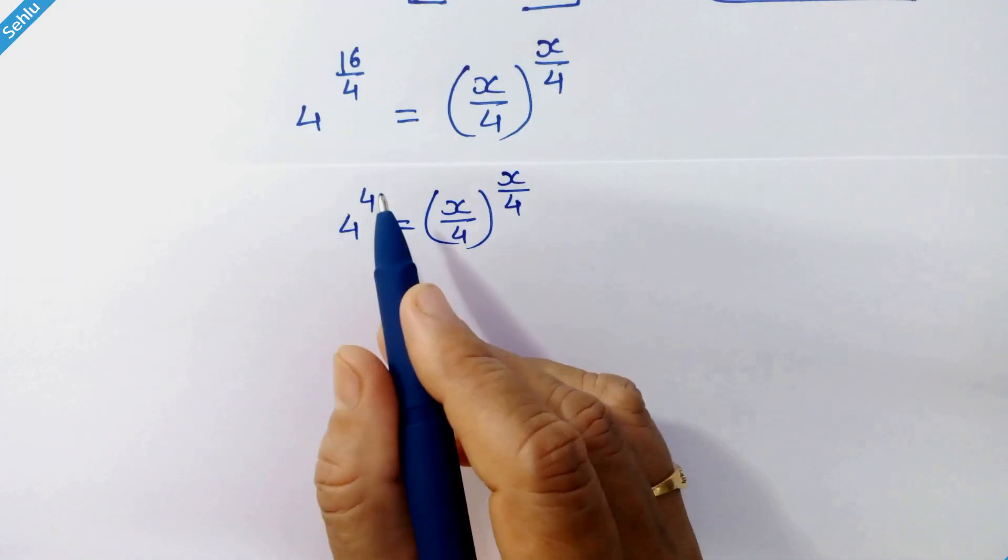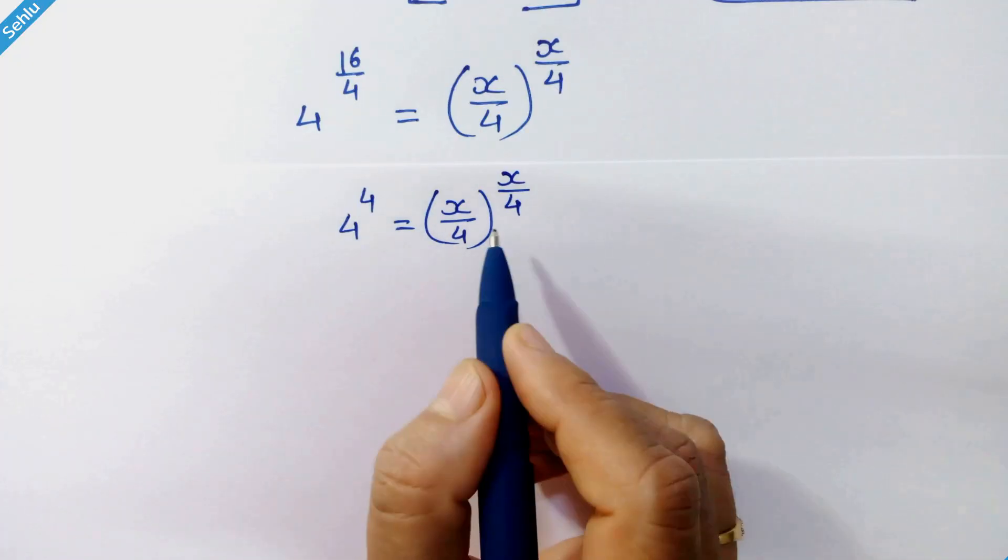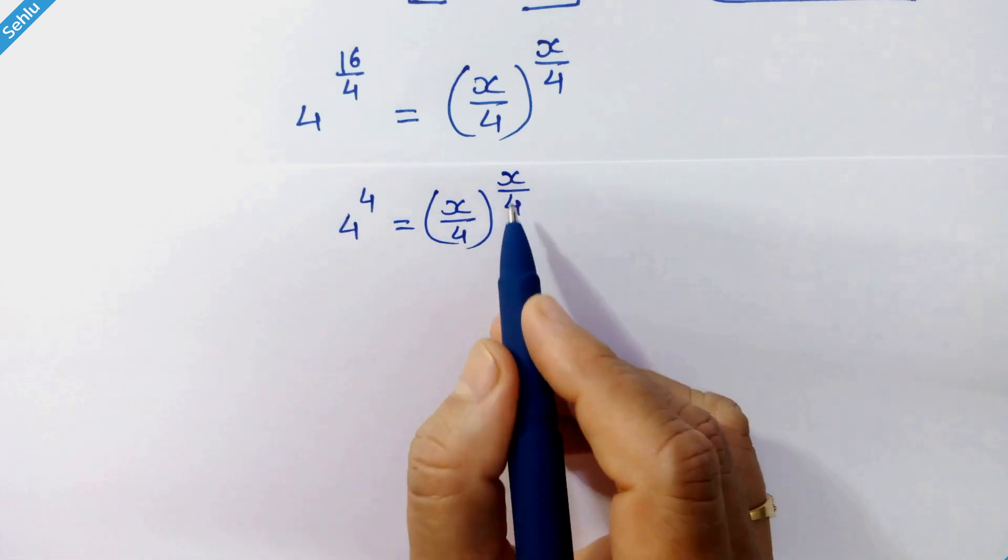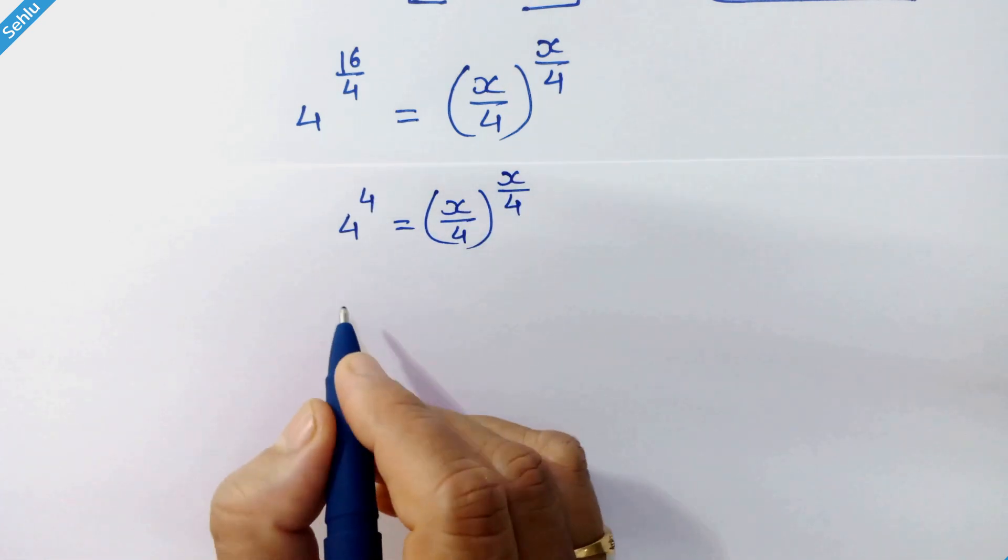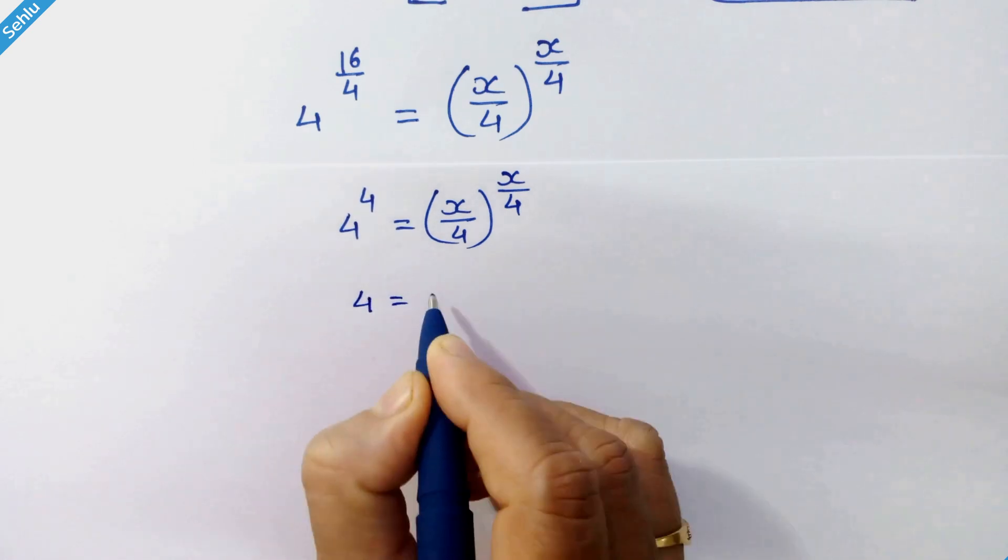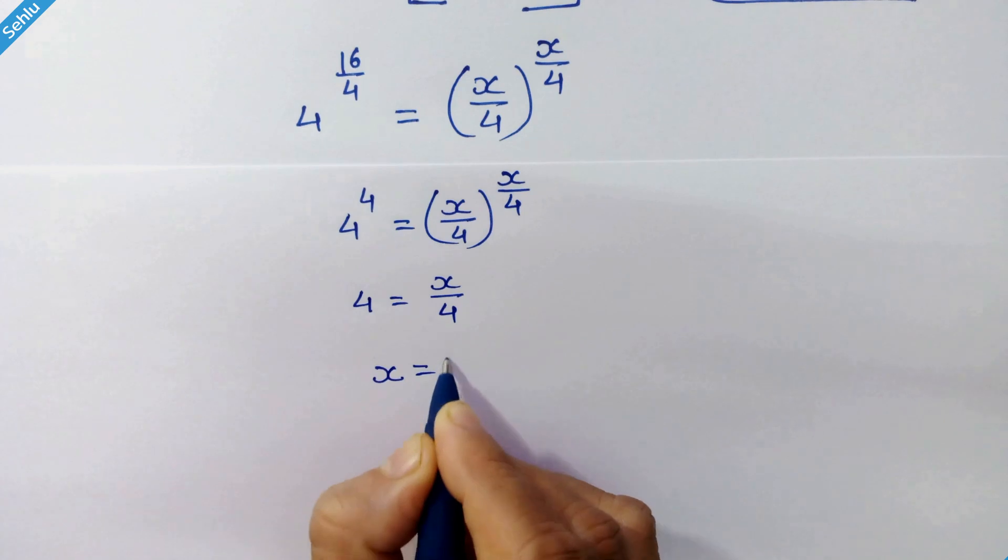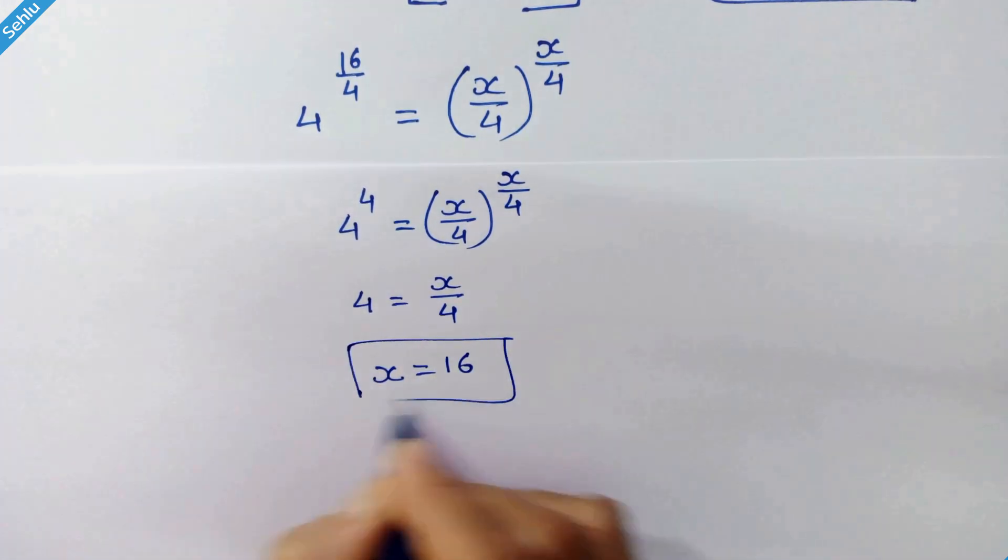Now we have the base and exponent the same on both sides: 4 and 4 here, and x over 4 and x over 4 here. So we can equate 4 equals x over 4, giving us x equals 16 as our answer.